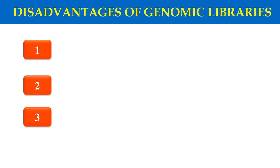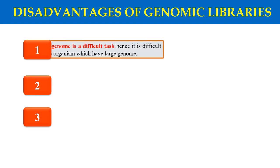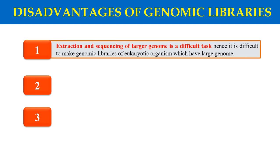There are also some disadvantages of genomic libraries. The first is that extraction of a large genome is a difficult task. If you want to make the genomic library of an organism whose genome is very large, you will find difficulty in extracting and sequencing that large genome. So this is a disadvantage of genomic libraries.